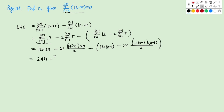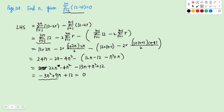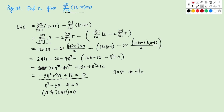We get 24N minus 2N minus 4N squared, and this one inside will be 12N minus 12, minus N squared plus N. Combining gives negative 3N squared plus 9N plus 12 equals 0. We divide by negative 3 on both sides, so N squared minus 3N minus 4 equals 0. Factoring: (N minus 4)(N plus 1) equals 0, giving N equals 4 or negative 1. Since negative 1 is less than 0, we discard it.